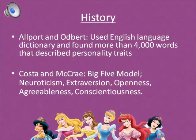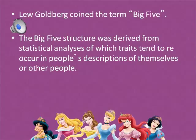Costa and McCrae developed the Big Five model with neuroticism, extroversion, openness, agreeableness, and conscientiousness. Goldberg coined the term Big Five. He began with a study by Tupes and Christel in 1958 and 1961. The Big Five structure was derived from statistical analysis of which traits tend to reoccur in people's descriptions of themselves and other people. Factor analysis was used to analyze how various personality traits were related in humans.